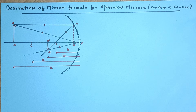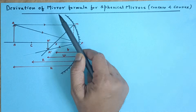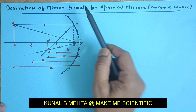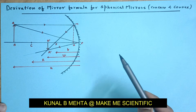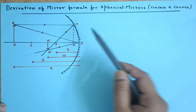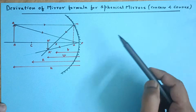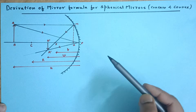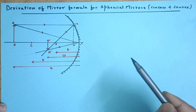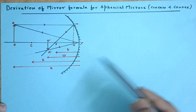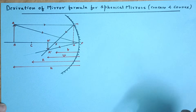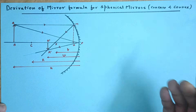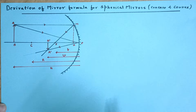Hello, scientific people. How are you all? In this video, we are going to derive the mirror formula for spherical mirrors using a concave mirror. In part B of this video, we are going to derive the same mirror formula with the help of the convex mirror. We are also going to see why sign conventions are applied twice during the entire process — once during the derivation, and once during the application of the formula while solving the numericals.